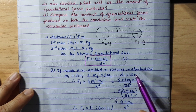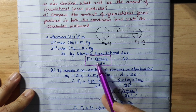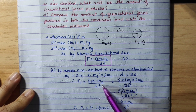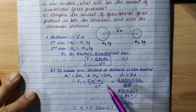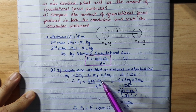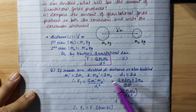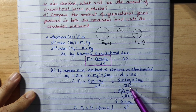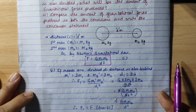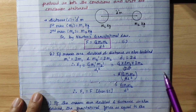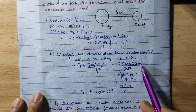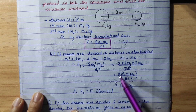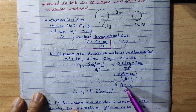Now we calculate the new gravitational force F1 = G·m1'·m2' / d1². Replacing m1' = 2m1, m2' = 2m2, and d1 = 2d, we get G·(2m1)·(2m2) / (2d)², which is G·4m1m2 / 4d², giving G·m1·m2 / d².